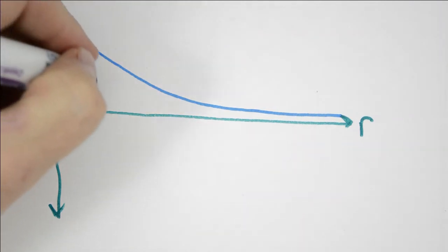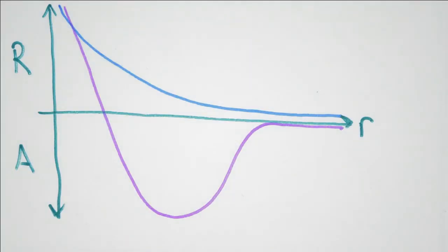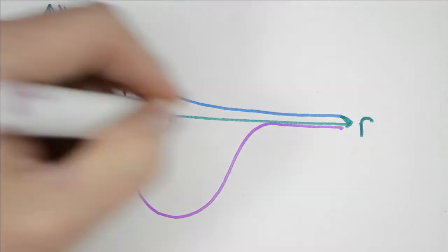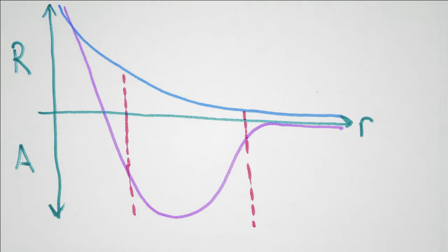But there's another force that becomes very important, and that is the strong force. The strong force is a short-range force. In a typical nucleon separation, it's very attractive. And the end result is, in the red area here, our nucleons can attract each other.